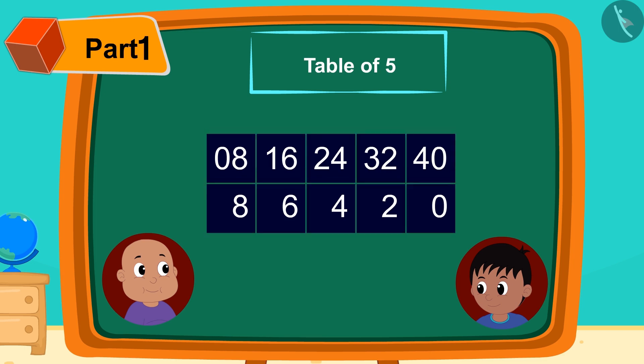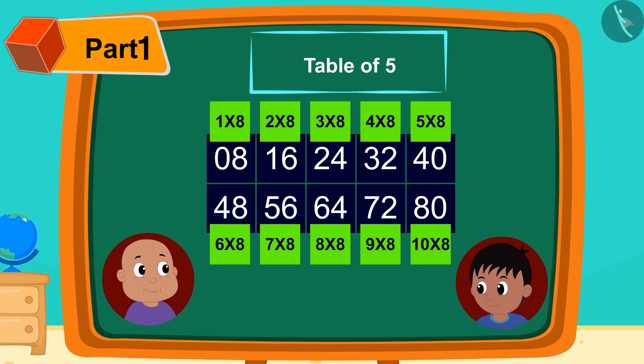Then, in front of the digits written in the second line, he wrote 4, 5, 6, 7, 8. And the table of 8 was ready.